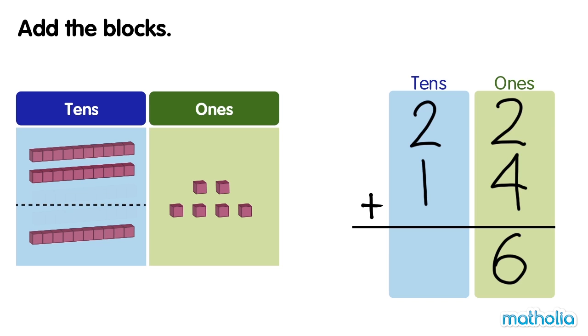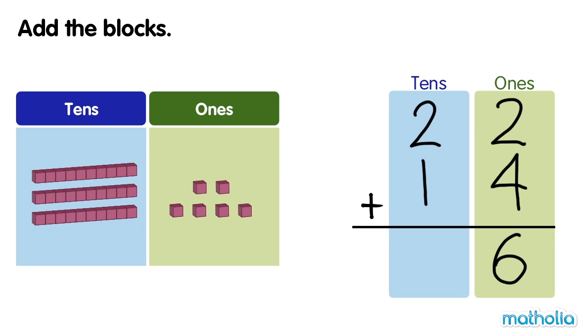Now let's add the tens. There are 3 tens. 2 and 1 are 3. There are 36 blocks all together. 22 plus 14 equals 36.